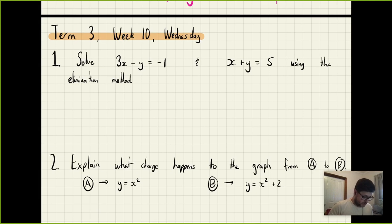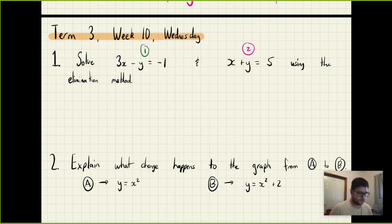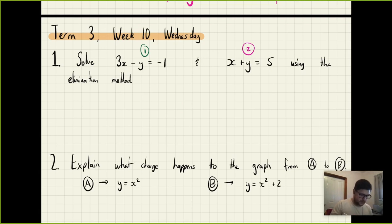For question one, we need to solve these two equations using the elimination method. The first thing I'm going to do is label each of these. Now I want to look at them and consider: do we have to change them at all, multiply them by anything? Do we add or do we subtract?